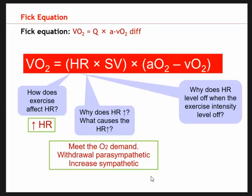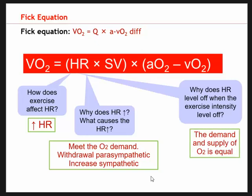Why does heart rate level off when exercise intensity levels off? The demand and supply of oxygen become equal. If the intensity of exercise is no longer increasing but remains the same, heart rate will start to level off — meaning we are in steady state. As we start exercising, heart rate and breathing rate rapidly increase as our body tries to get enough oxygen. But as exercise intensity levels off and we reach steady state, heart rate levels off because our oxygen demand is met.